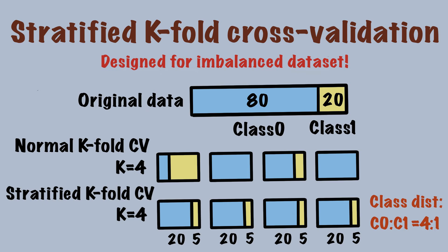To illustrate, stratified k-fold CV should generate a split like this: each fold has 20 samples from class 0 and 5 samples from class 1. The distribution is exactly the same as the original data. Although we don't always get the exact same distribution, roughly the same is also acceptable.